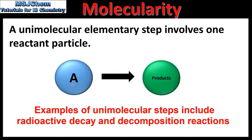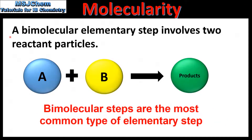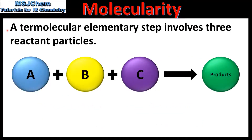So step one with its two reactant particles is known as being bimolecular, and step two with its two reactant particles is also bimolecular. To summarize: a unimolecular elementary step involves one reactant particle — for example, one particle A reacts to form products. A bimolecular elementary step involves two reactant particles — for example, particles A and B react together to form products. A termolecular elementary step involves three reactant particles — for example, particles A, B and C reacting together to form products.